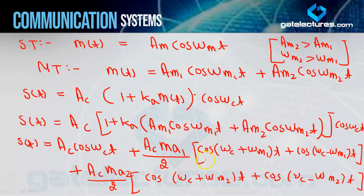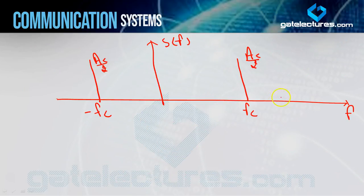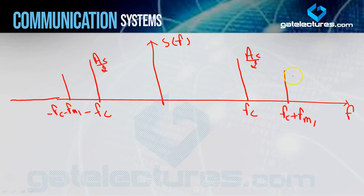Next term फिर cos है, amplitude Ac·Ma1/2 है। एक impulse plus frequency पर: fc+fm1, और एक minus frequency पर: −(fc+fm1). Amplitude divided by 2 करने पर Ac·Ma1/4 हो जाएगा। तो fc+fm1 पर और −fc−fm1 पर — दोनों का amplitude Ac·Ma1/4 same होगा।